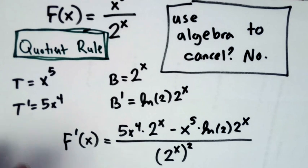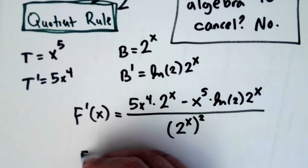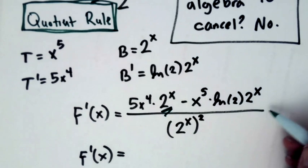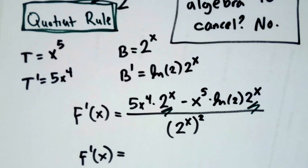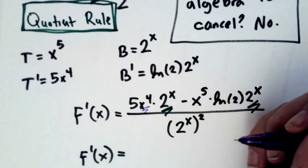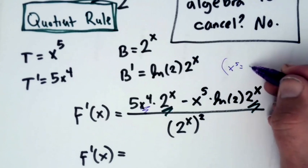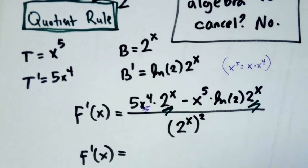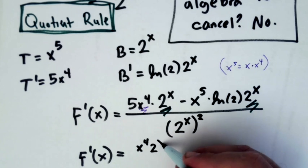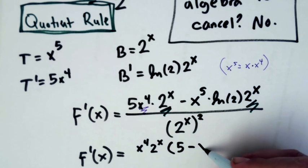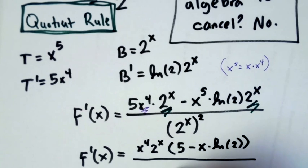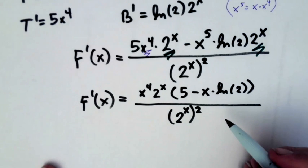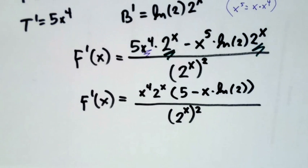So can we simplify? Let's go ahead and pull out that 2 to the x. We can factor out this 2 to the x because it's being multiplied by both pieces. Can we factor out anything else? We also have an x to the fourth that we can factor out because x to the fifth is equal to x times x to the fourth. So if I pull out both of those pieces, what I have is x to the fourth times 2 to the x times 5 minus x times ln of 2 all over 2 to the x quantity squared. Do you see what I see?